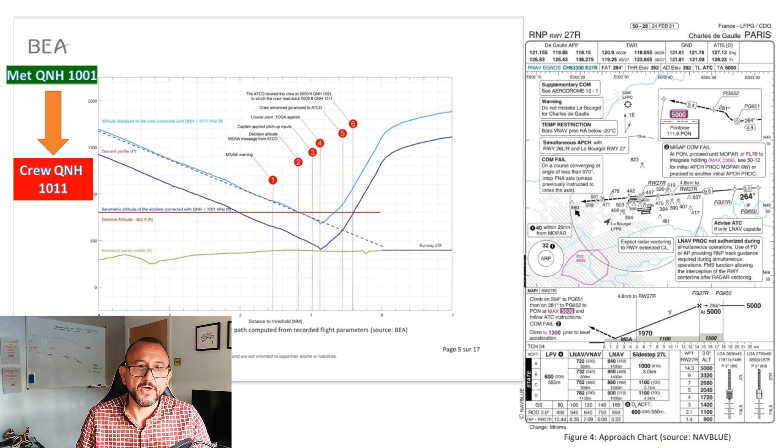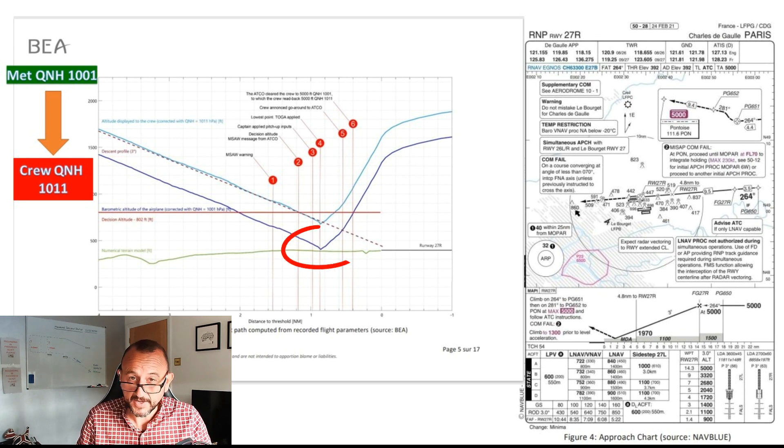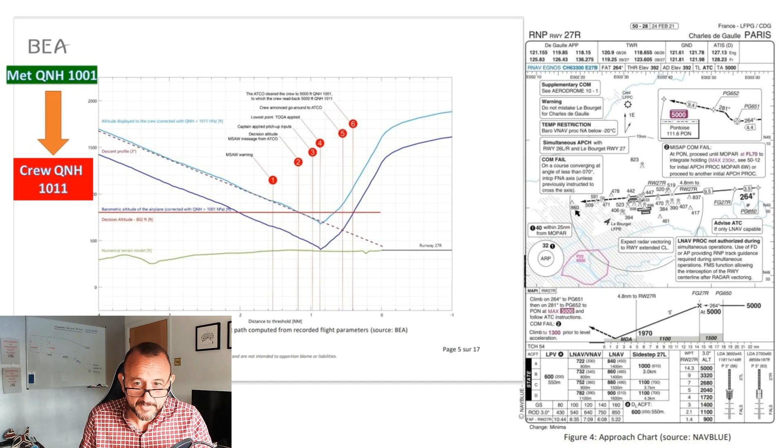The reality is, as you can see here from the profile provided from BEA, that it followed a profile below the actual prescribed trajectory. You'll see here at the blue line as the aircraft then commenced its go-around, only a few feet there above the actual terrain, well short of runway 27 right.